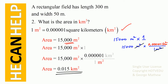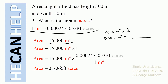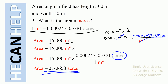Our area in kilometers squared is 0.015 km². Next, what is 15,000 meters squared in acres? Each meter squared is 0.000247105381 acres. We multiply 15,000 meters squared by one, replacing one with 0.000247105381 acres per meter squared. Meters squared cancels, and we get 3.70658 acres.